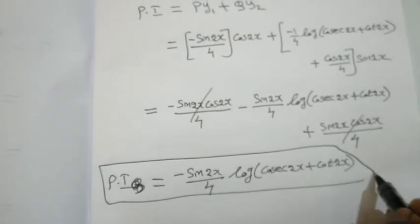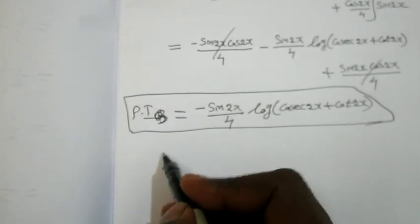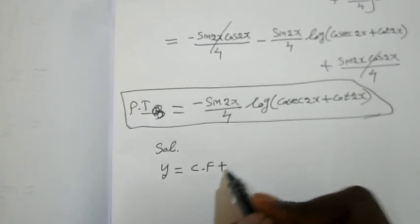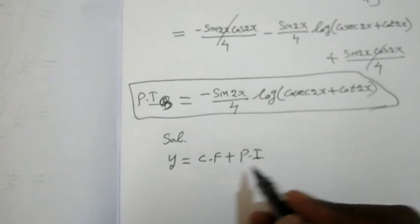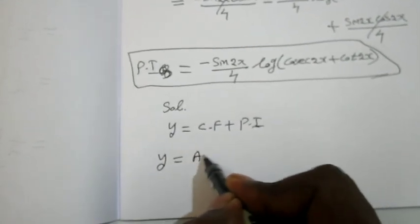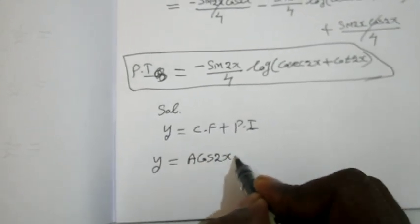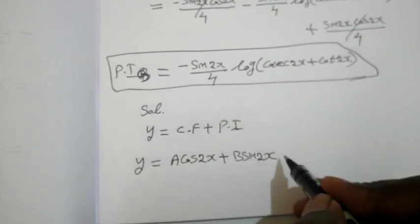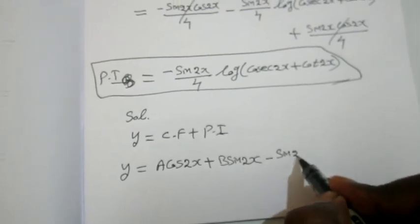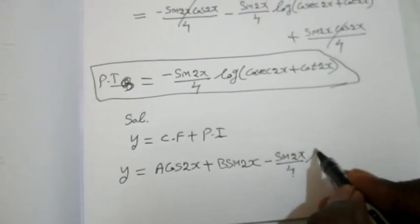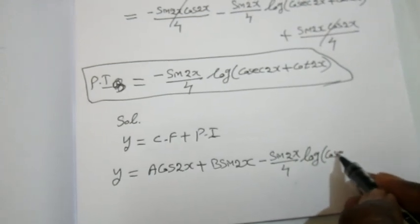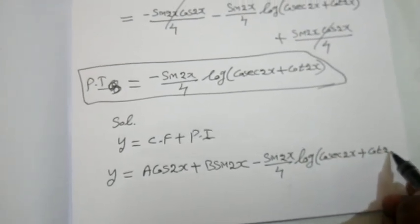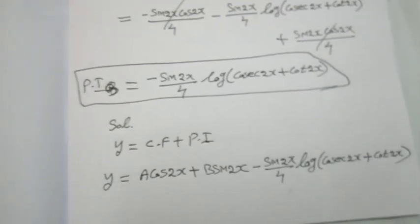The complete solution is y = CF + PI. We found CF = A cos 2x + B sin 2x. Therefore the final answer is: y = A cos 2x + B sin 2x - (sin 2x / 4) · log|cosec 2x + cot 2x|.